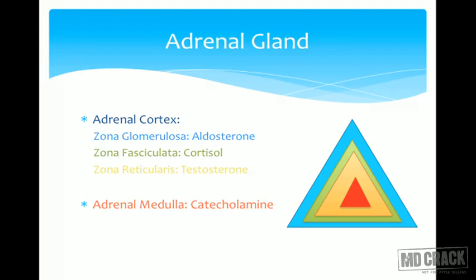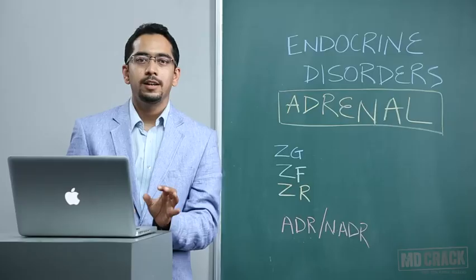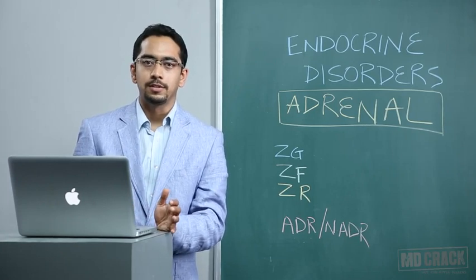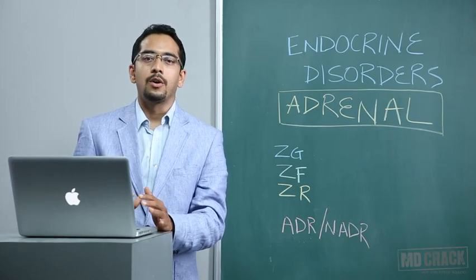Please remember from your anatomy and physiology: the adrenal cortex is made up of three zones — zona glomerulosa, zona fasciculata, and zona reticularis. The zona glomerulosa, or outermost layer, gives rise to aldosterone. The zona fasciculata, or middle layer, gives rise to cortisol. The zona reticularis produces androgens, for example DHEA or testosterone.